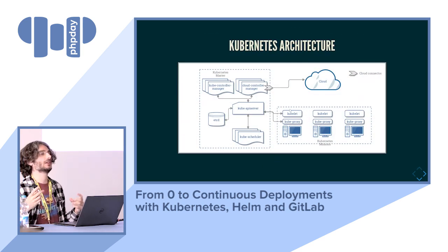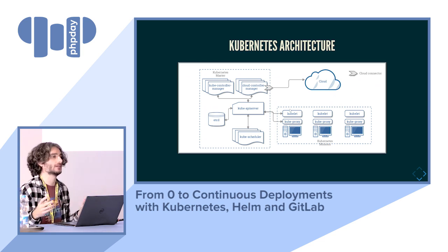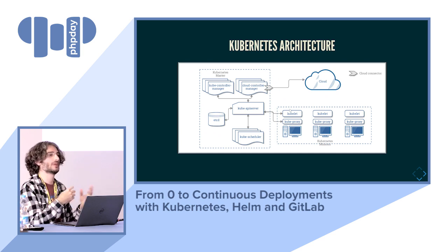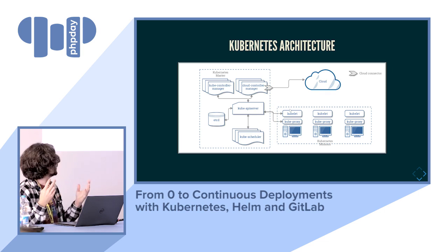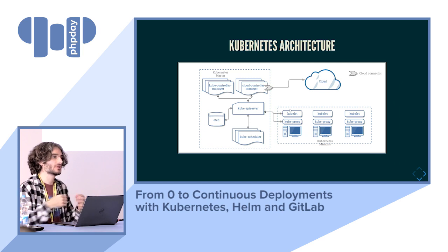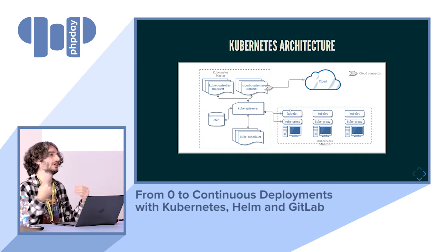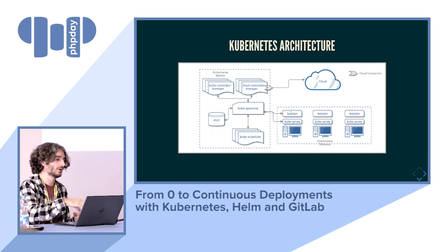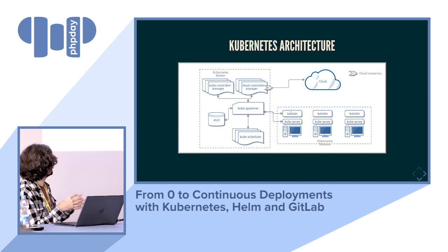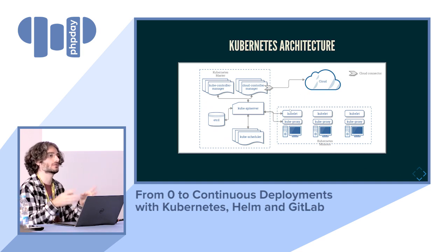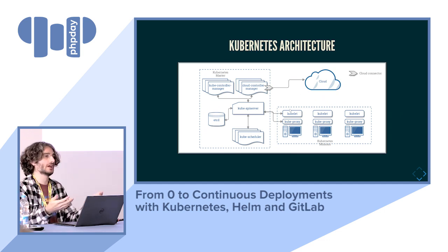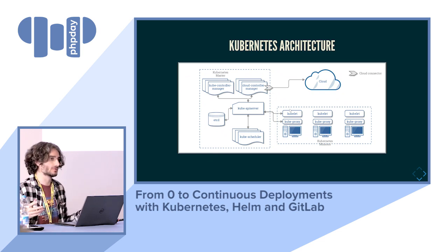The architecture is cluster-centric. You have a main control plane which usually resides in a master node, made of many components. The main one is the API server — a RESTful API that interacts with worker nodes, which are basically Docker hosts. These worker nodes have local components that interact with the control plane, reporting their state. The control plane has controllers that look up the current cluster state, stored in an etcd central storage — the only source of truth — and reconcile it with what you declared you wanted.